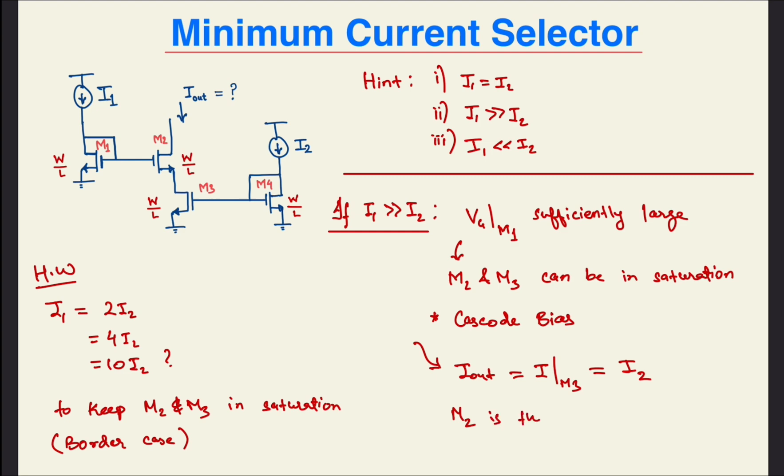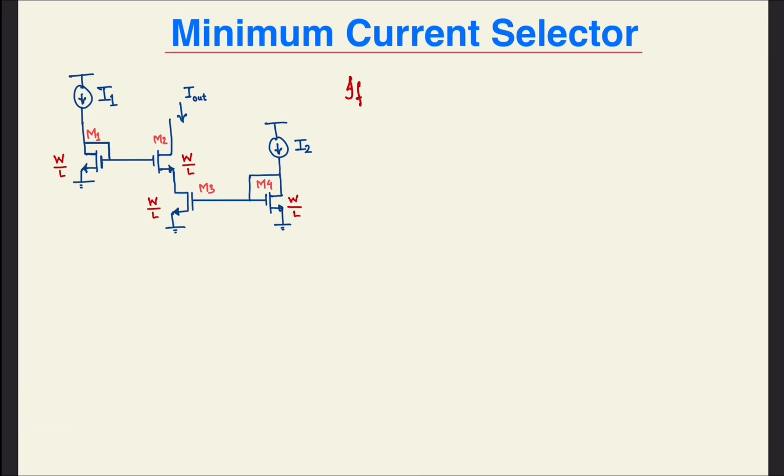So, the next case is what happens if I2 is much much greater than I1. In that case, M4 and M3 would have a large gate voltage, and thus the Vdsat of M3 would be large.